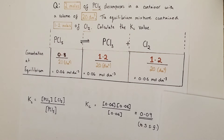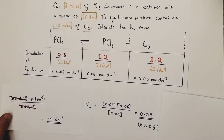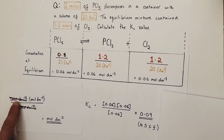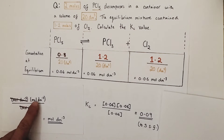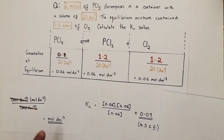Finally, to calculate the unit, we substitute the unit for concentration into the Kc expression. We have moles per litre times moles per litre divided by moles per litre. We can cancel one moles per litre top and bottom, leaving us with moles per dm⁻³ as the unit for this particular Kc calculation.